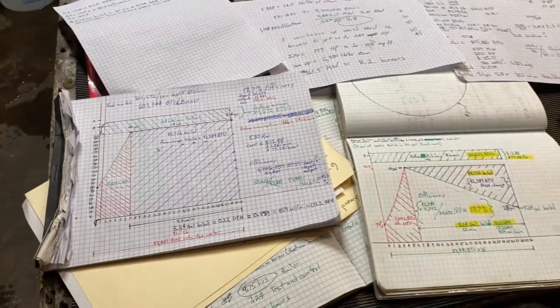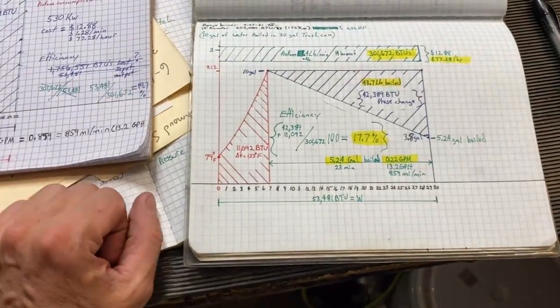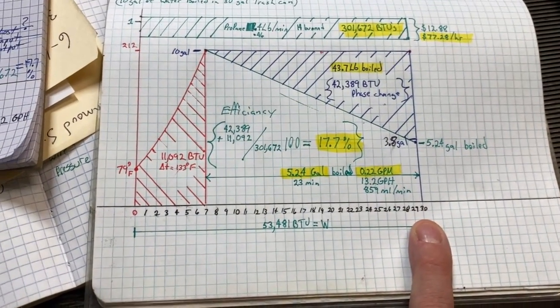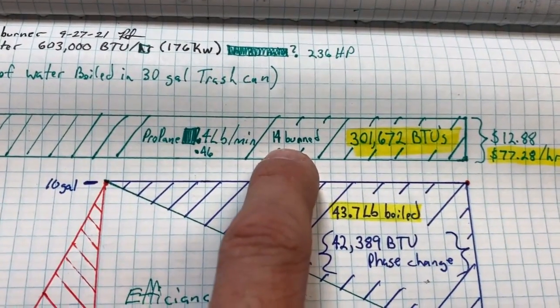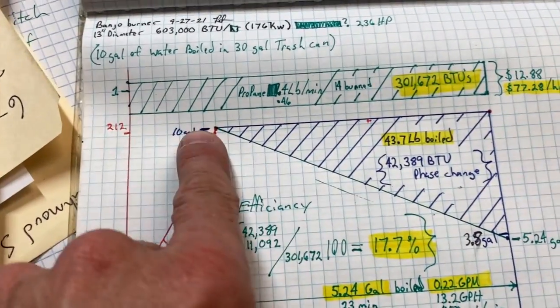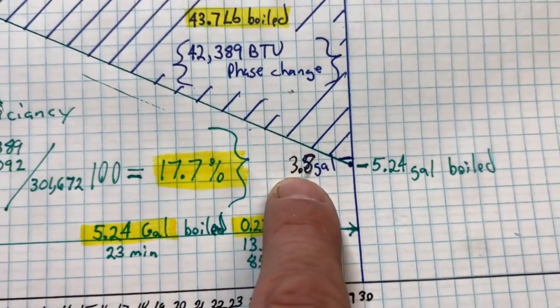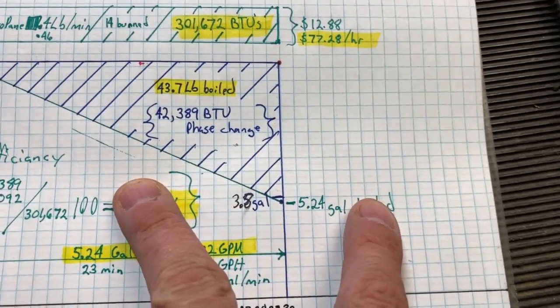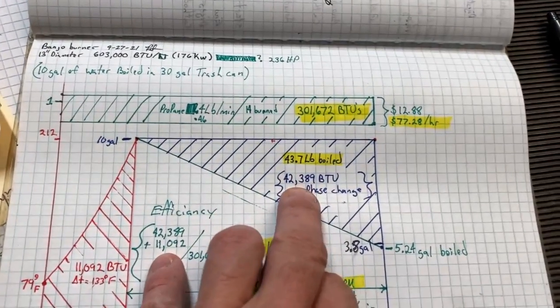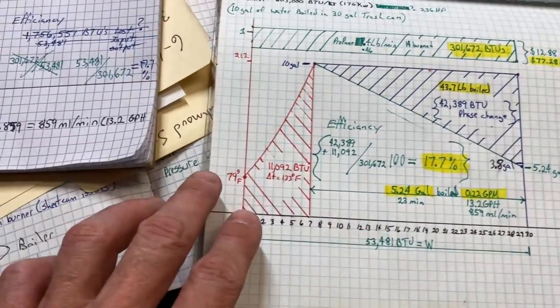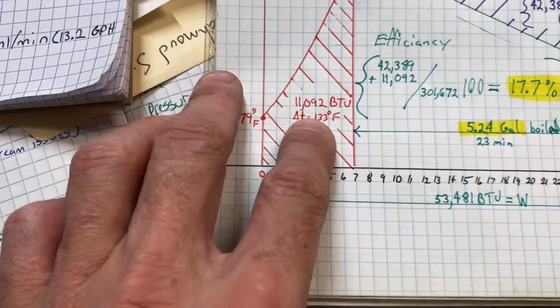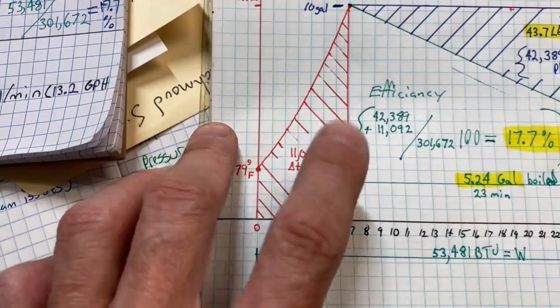So what the heck did we just see on a thermodynamic level? Essentially we ran the system for 30 minutes. In that time we burned 14 pounds of propane, giving us 301,000 BTUs of energy, and it cost us $12.88. We started off with 10 gallons, ended up with 3.8 gallons, meaning that we boiled 5.24 gallons of water. The phase change energy needed to take 212 degree water to 212 degree steam was 42,389 BTUs. It took seven minutes to reach that point. There was a temperature change of 133 degrees and that required 11,092 BTUs to heat up 10 gallons of water from 79 Fahrenheit to 212 in seven minutes.